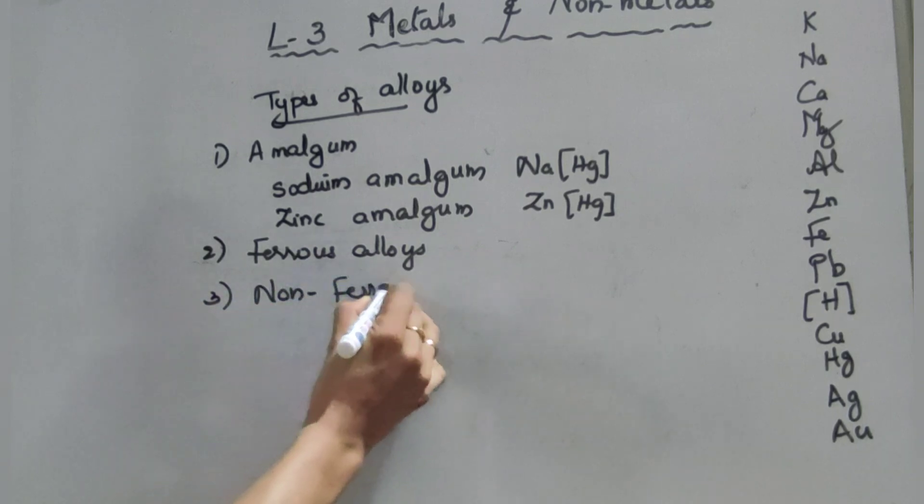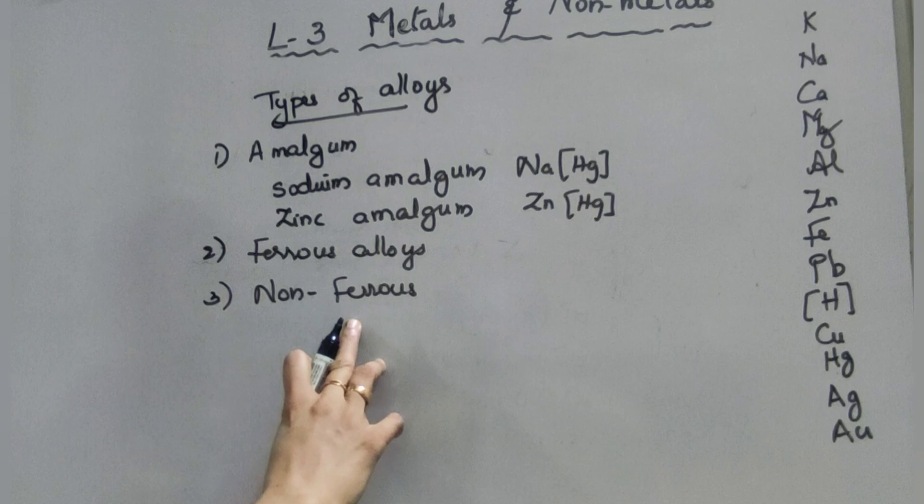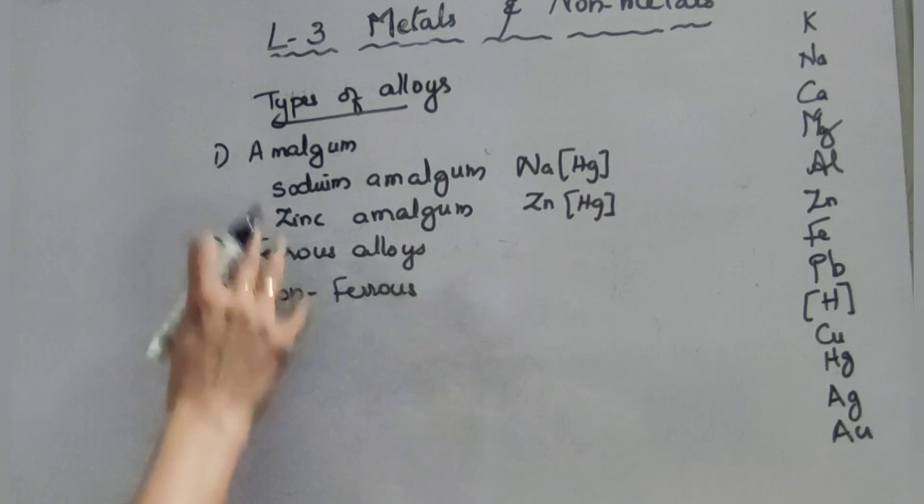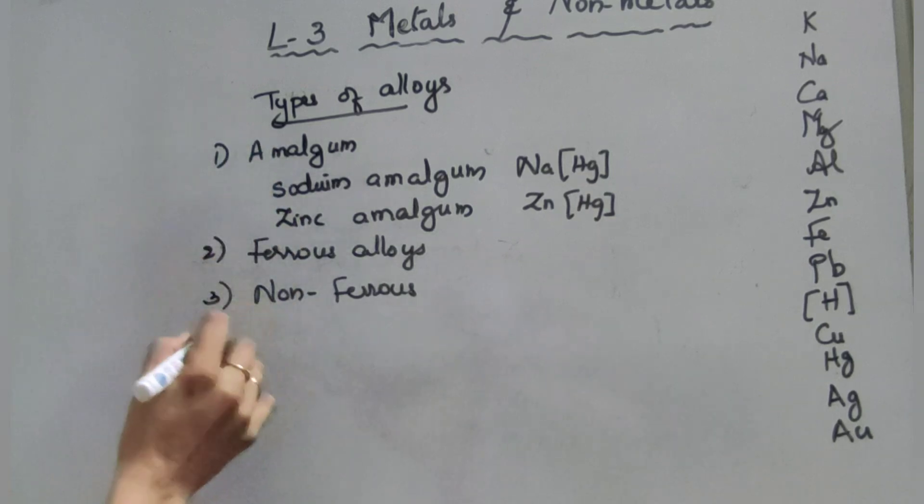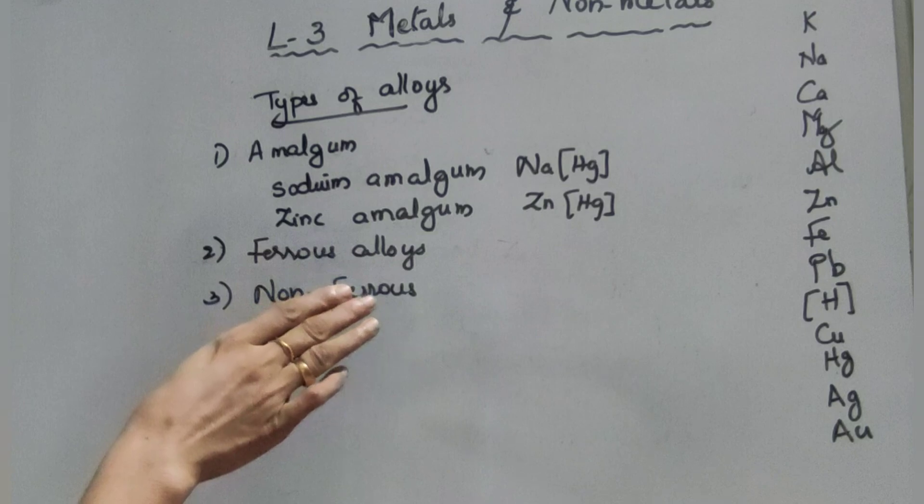Third one: it is non-ferrous alloys. Here an alloy does not contain iron. That does not contain iron. These are the types of alloys. The portion is completed. I hope all of you understood the third lesson: metals and non-metals.